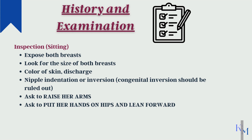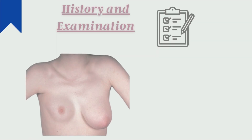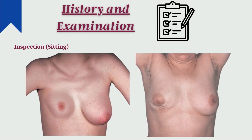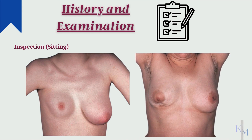Telangiectasias are present if a woman had previous radiation treatment for breast disease. Give the command to the woman to raise her hands and look for any retraction of skin — this indicates neoplasm that might be adherent to the underlying muscle. Then ask her to put her hands on her waist and lean forward, observing both breasts for any retraction of skin. Remember to observe the breasts in two ways: arms up and arms on the waist.